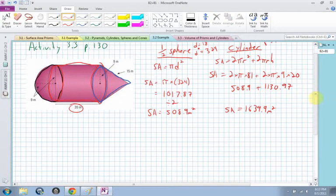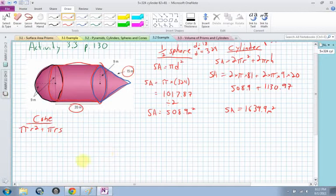So the last one to do is the cone, and the cone surface area is πr² plus πrs, and s stands for slant, which is equal to 15. πr² is 254.5. I could go through all the math again, but I'm sure you understand, plus πrs. So I multiply all those together, and I get 424.1. I add them together, I get a surface area of 678.6 meters squared.